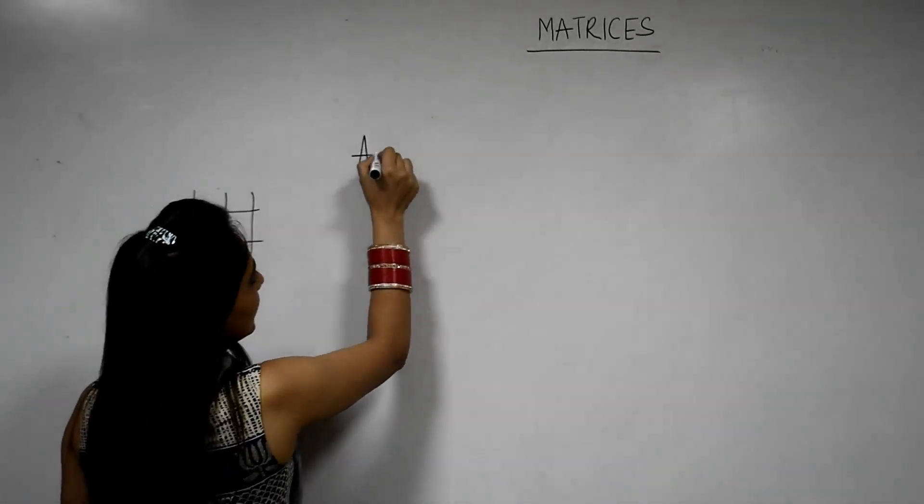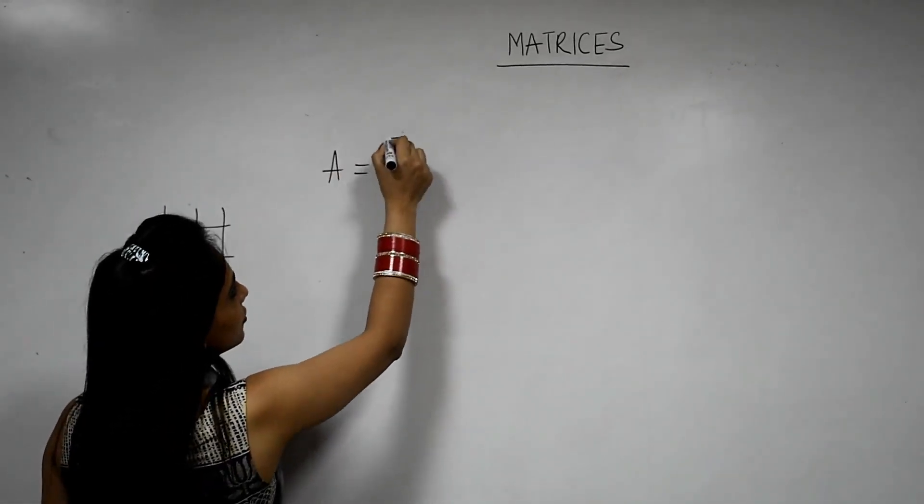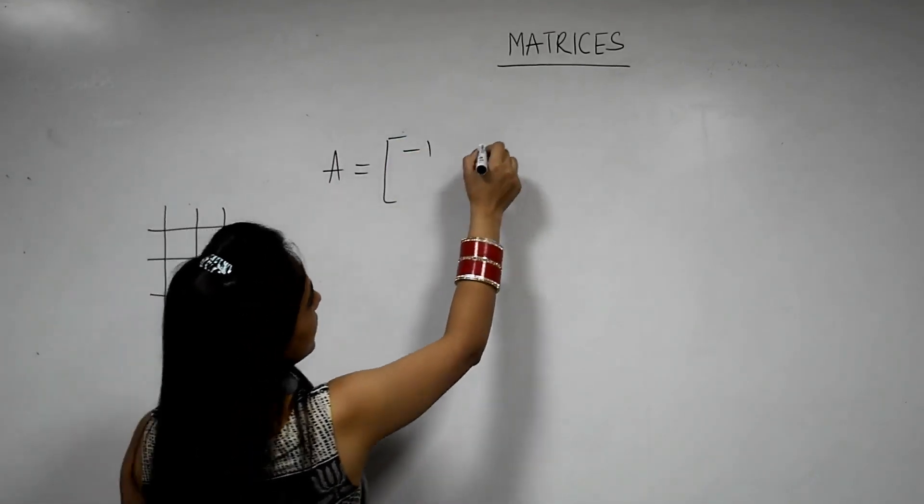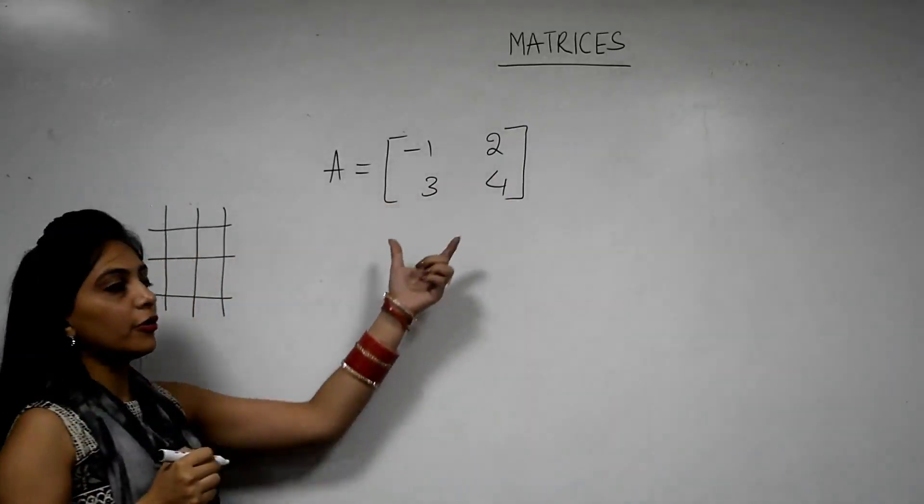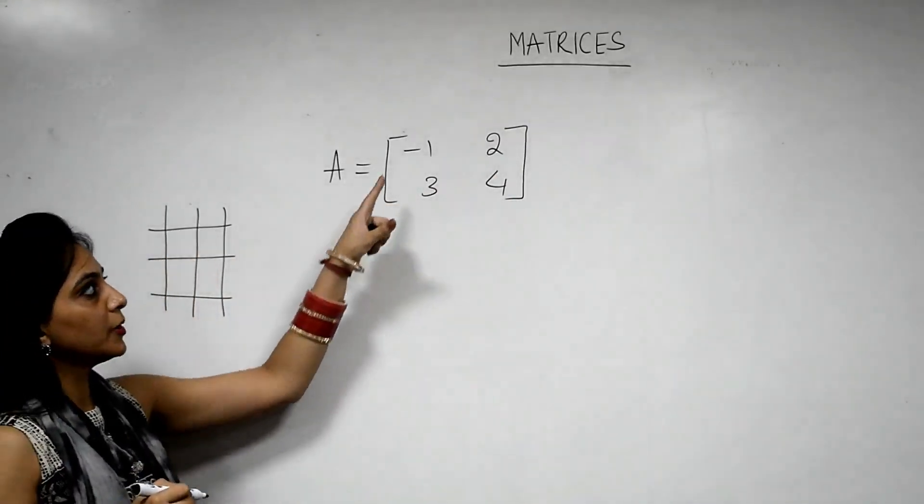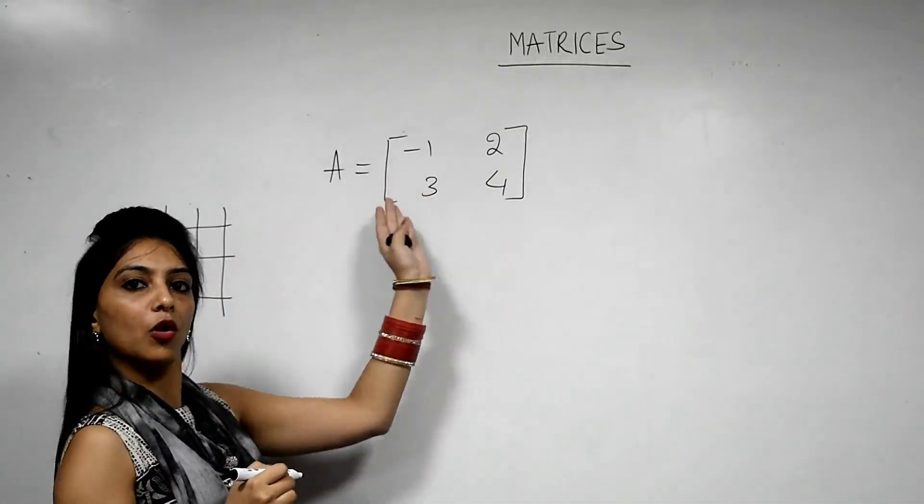So first of all, let us take an example. I am taking a matrix, let us say minus 1, 2, 3 and 4. Order of this matrix is 2 by 2 because 2 rows are there and 2 columns are there.